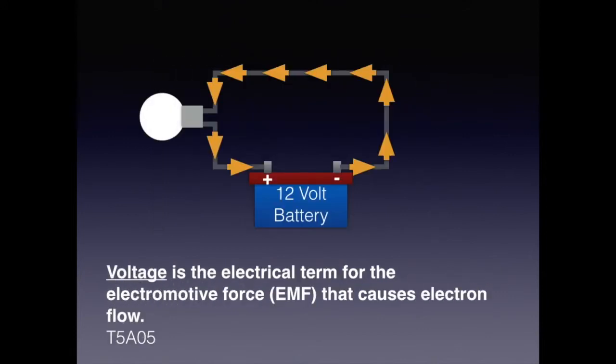Electromotive force, or EMF, is also called voltage. It facilitates the flow of electrons. Think of it as a hose connected to a faucet — the hose is analogous to the voltage and the water flowing through it is like electron flow or current. A small hose is restrictive to the flow where a large hose allows more water to flow through it; this restriction is like resistance. Voltage is sometimes referred to as potential because it has a potential for electron flow even if none are flowing. For the exam, understand that voltage is the electrical term for the electromotive force that causes electron flow.